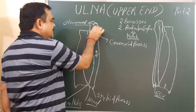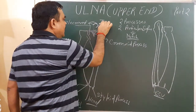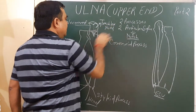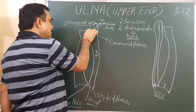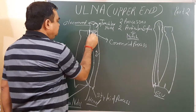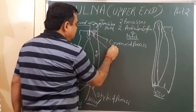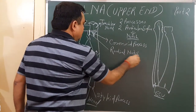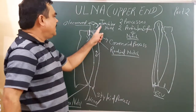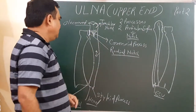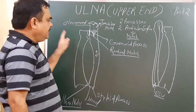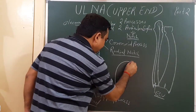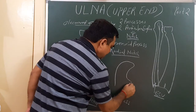There are two articular surfaces. Here is the first articular surface — this is the trochlear notch. And here is another articular surface — this is the radial notch. So it has two articular surfaces: the trochlear notch and the radial notch. Viewed from the lateral side, it appears like this.